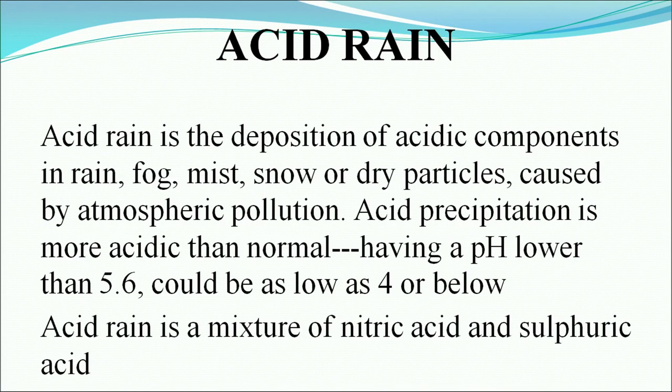Our next topic is acid rain. Acid rain is the deposition of acidic components in rain, fog, mist, snow, or dry particles, caused by atmospheric pollution. Acid precipitation is more acidic than normal — normal pH is around 7, whereas acid rain has a pH around 5.6 or as low as 4. Acid rain is a mixture of nitric acid and sulfuric acid.